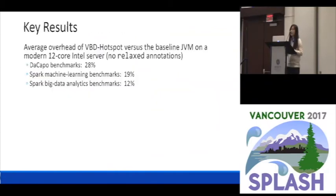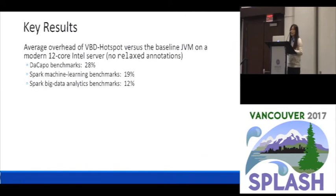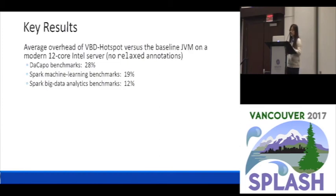Before I talk more about the implementation, let me give you a quick peek at the key results. We found that on a more than 12-core Intel server, the overhead of our VBD HotSpot against the original JVM is 28% for the DaCapo benchmarks, 19% for Spark machine learning benchmarks, and 12% for Spark big data analytics benchmarks.